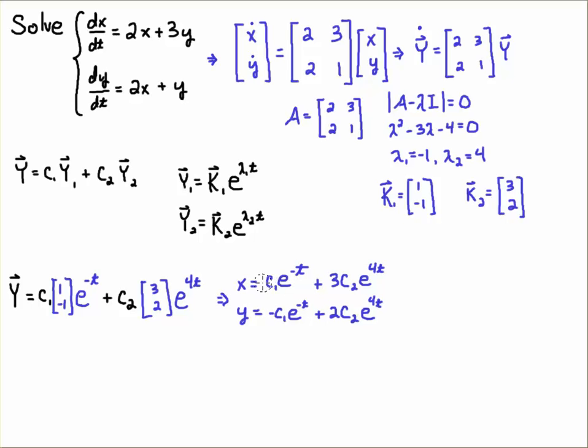But anyways, these are the vector components. So the way that I got those is that I just distributed the C1 to the top component, e to the minus t. So that's C1 e to the minus t plus 3C2 e to the 4t. There it is. And then Y is minus C1 e to the minus t plus 2C2 e to the 4t. So this is the solution in component form.